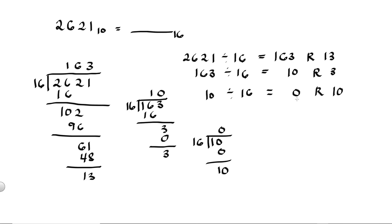Once you get 0, this is when you stop. Focus on the remainders and convert them to hexadecimal numbers. 10 in decimal is equivalent to letter A in hexadecimal. 3 in decimal is also 3 in hexadecimal. 13 in decimal is equivalent to letter D in hexadecimal. Read the answer from most significant bit to least significant bit, or from bottom to top. So the hexadecimal equivalent of 2621 is A3D in base 16.